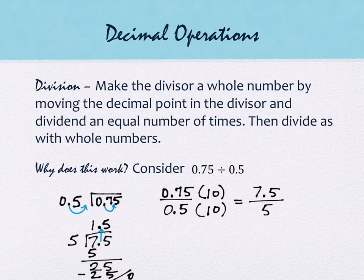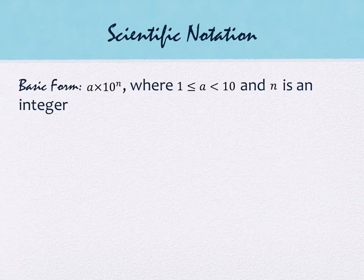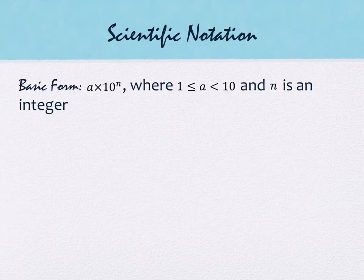We've covered addition, subtraction, multiplication, and division. A few other topics come up in this section. Scientific notation is next. Scientific notation involves decimal points and exponents. The basic form is a times 10 to the n, where a is between 1 and 10 — a single digit at the beginning, possibly with decimals after it — and the exponent n must be an integer: positive, negative, or zero whole numbers.